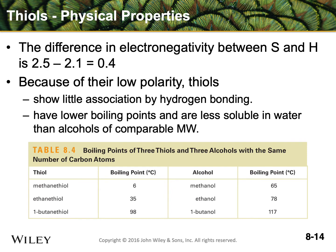The electronegativity difference between hydrogen and sulfur is very low — about the same as between carbon and hydrogen — which we consider an almost non-polar bond. Because of this non-polar bond, the hydrogens on thiols don't hydrogen bond the same way they do in alcohols. We can demonstrate this by boiling point: methanethiol has a boiling point of 6°C, where methanol has 65°C — almost a 60 degree difference. Butanethiol is also significantly lower than the comparable butanol, and thiols are less soluble in water than the comparable alcohols because of the lack of hydrogen bonding.